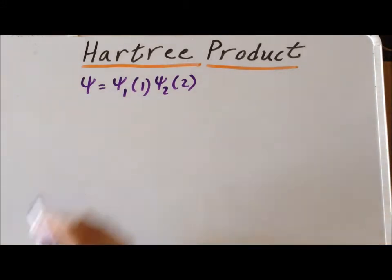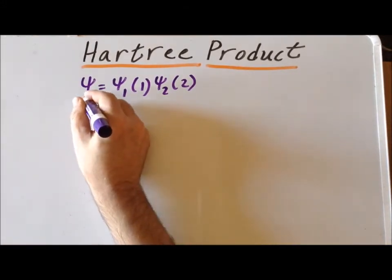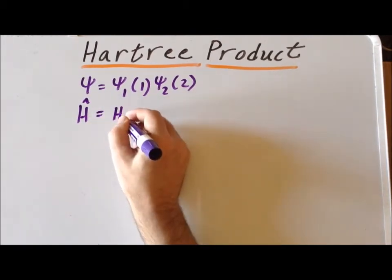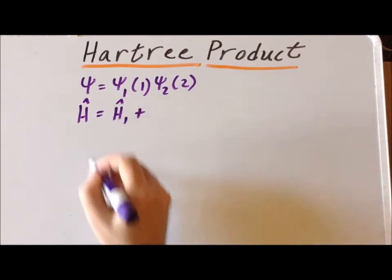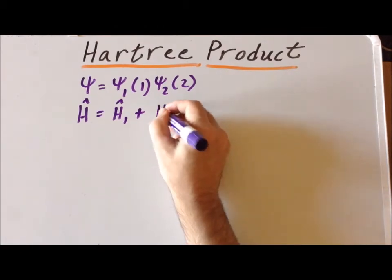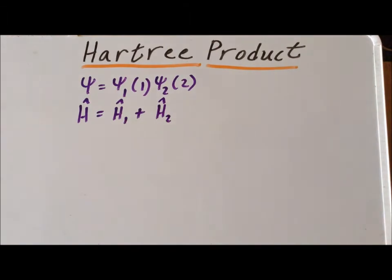Similarly, if we assume that these are non-interacting, it means that we can rewrite the Hamiltonian as the sum of two operators. The first one, Ĥ₁, which acts only on ψ₁, and the second operator, Ĥ₂, which acts only on ψ₂.